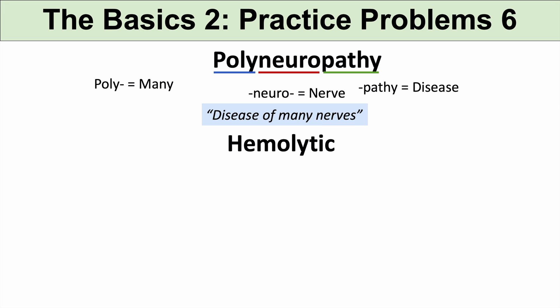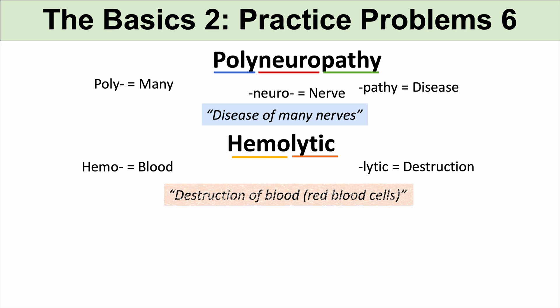The next term is hemolytic. Hemo means blood — similar to hemato, which also means blood. And the suffix lytic means destruction. So hemolytic means a destruction of blood, and specifically a destruction of red blood cells.